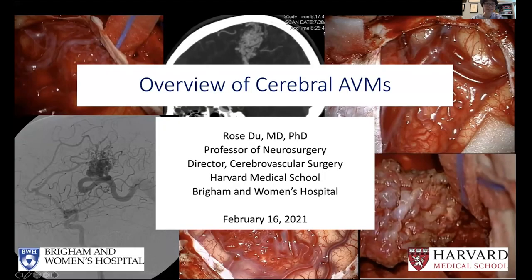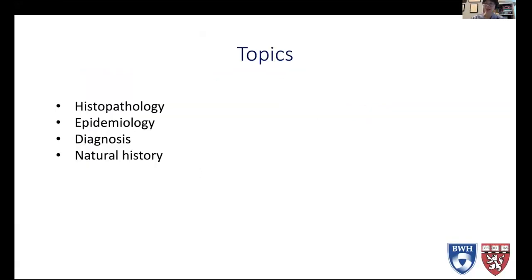Thanks everyone for coming here to listen to this this evening. The overall topics for today's talk would be the histopathology of arteriovenous malformations, or AVMs for short, the epidemiology — who gets it and other statistics — the diagnosis, how do we diagnose AVMs and how do we talk about AVMs, and finally the natural history. I will leave the management topics for the next session.